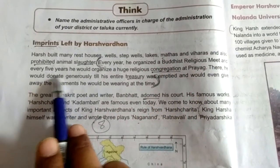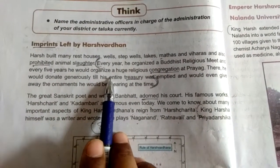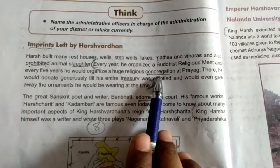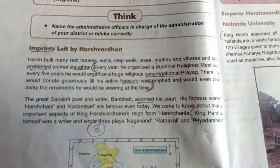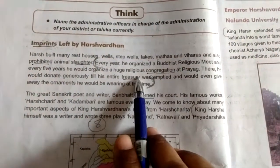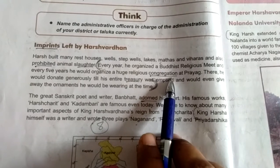Every year he organized a Buddhist religious meet. And every five years he would organize a huge religious congregation — meaning assembly — at Prayag.